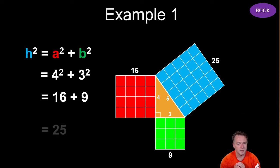So 16 plus nine we get 25 and then to work out h we need to then do the square root of it because that's the opposite of squaring and we're left with five. Cool.